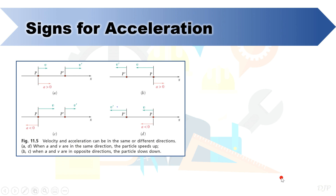This figure shows the four possible cases of relating velocity and acceleration in rectilinear motion. In case A, the particle is moving faster because its velocity and acceleration are in the same direction. In case B, the particle is slowing down because its velocity and acceleration are not in the same direction. The same goes with case C — the particle is also slowing down because velocity and acceleration are not in the same direction. Case D is similar to case A: the particle is moving faster because its velocity and acceleration are in the same direction.